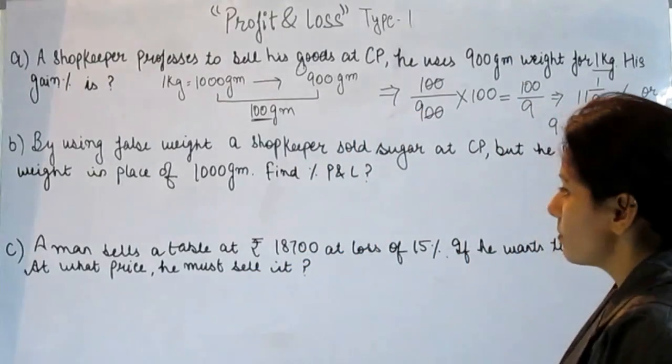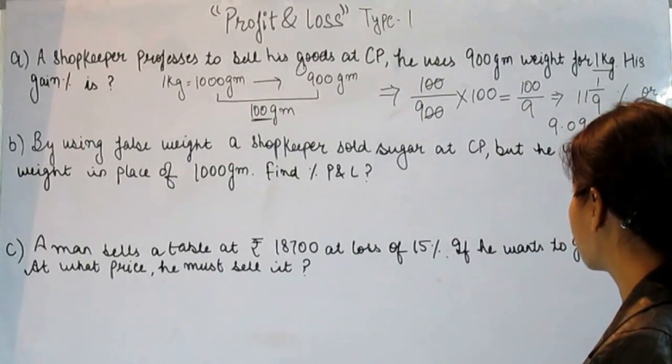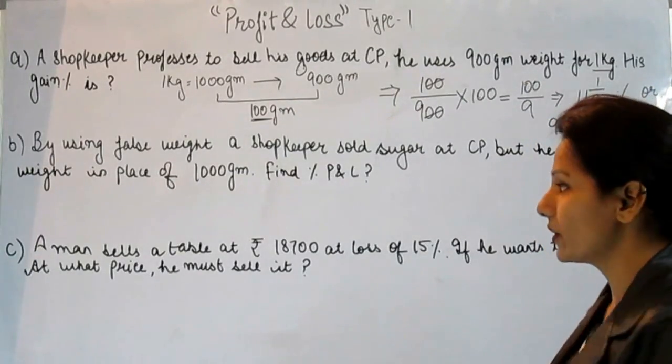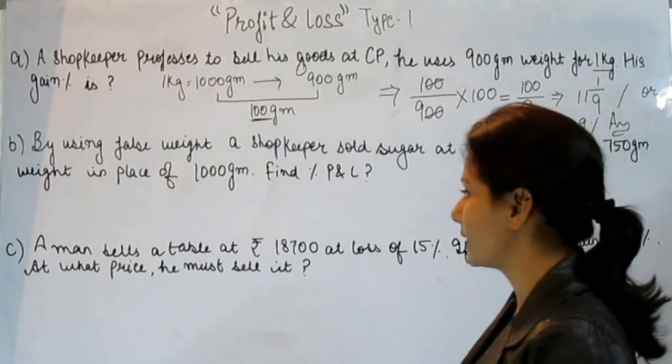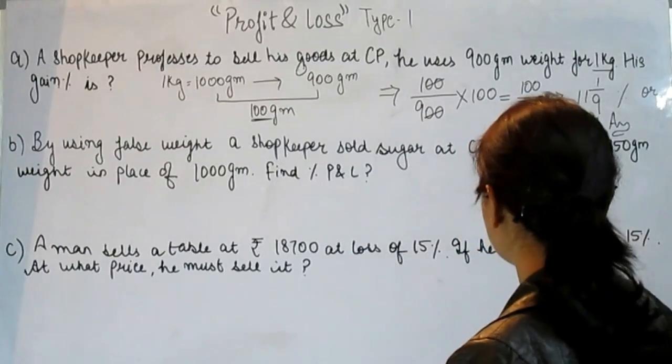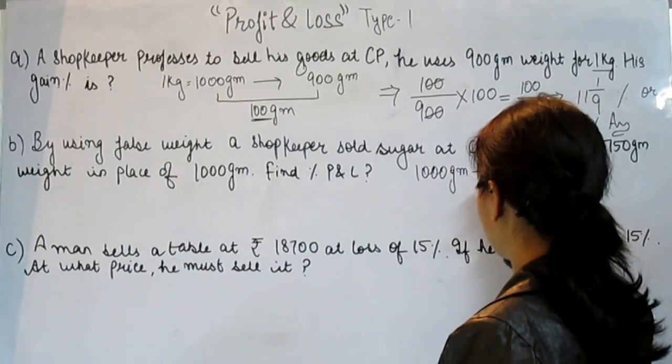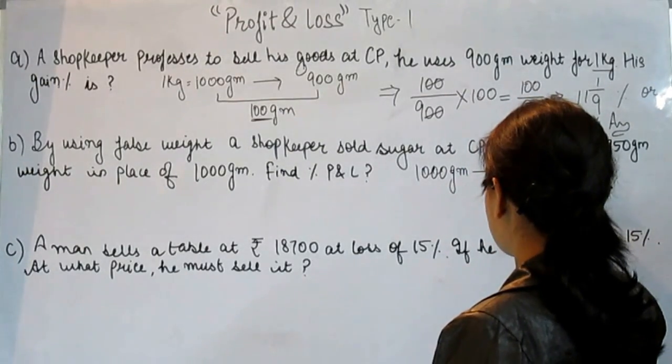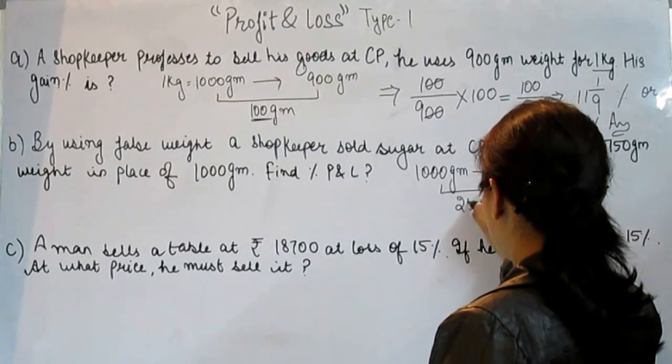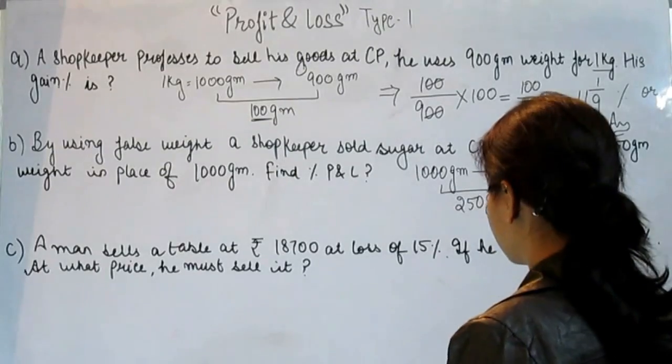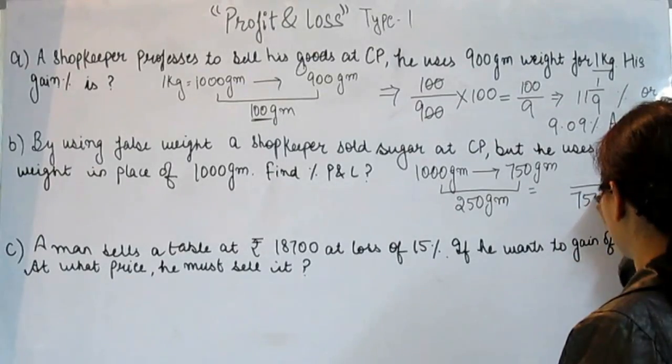Our next question is: by using false weight, a shopkeeper sold sugar at cost price, but he uses 750 grams weight in place of 1000 grams. Find the P&L. Again, the same problem. On 1000 grams, he is giving only 750 grams.